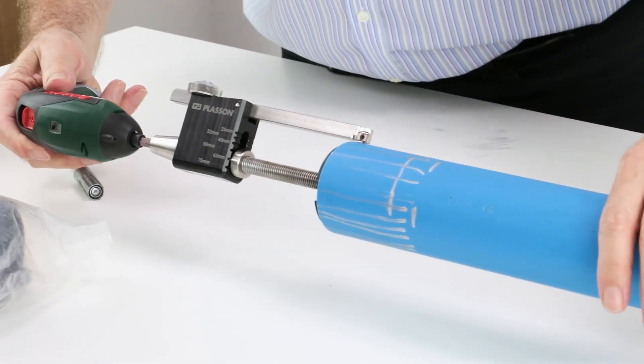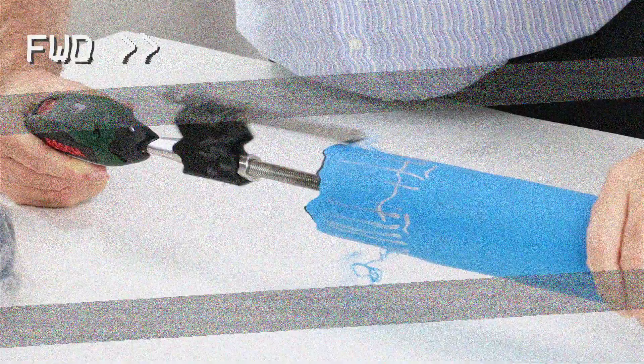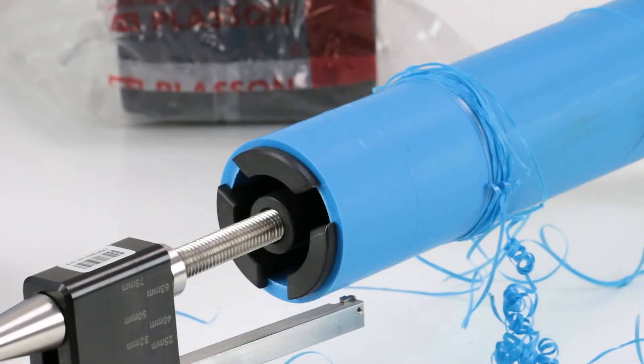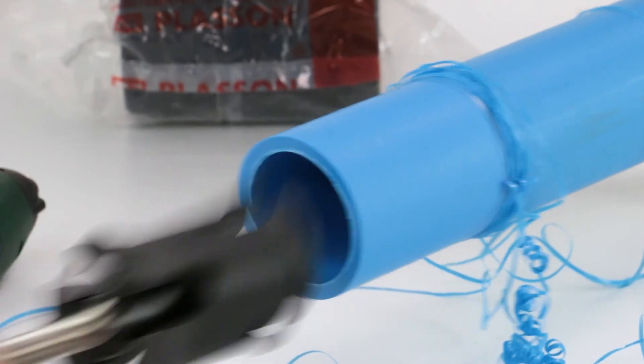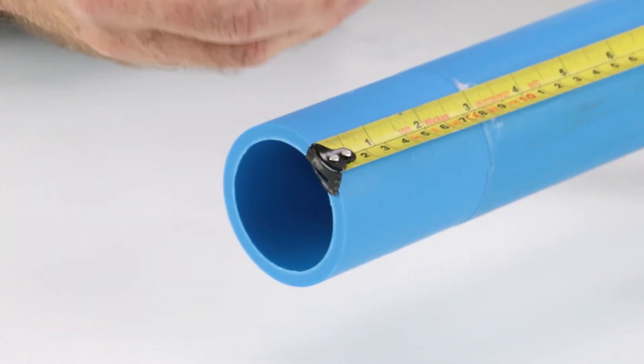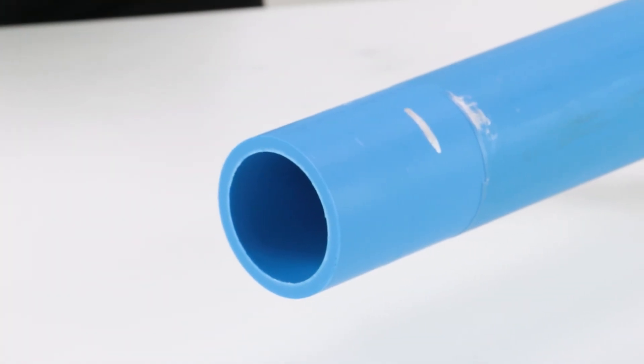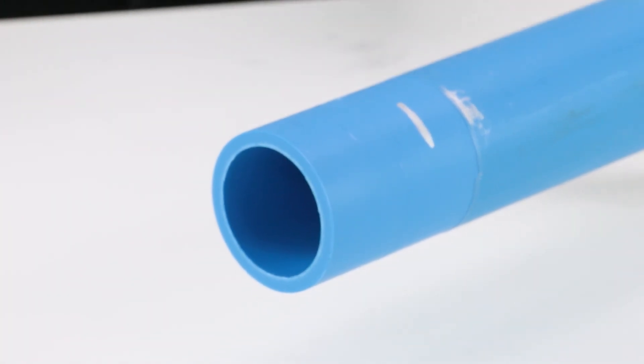Now that the pipe is secured in clamps, it's going to make the actual scraping process a lot easier and quicker. Once finished, if no scribbles are showing after you've scraped, then you've taken enough of the surface off. This is where that second line we drew on the pipe comes in handy, as you'll have removed the initial line through scraping but can measure 20mm away from the second line to redraw it in the same place.